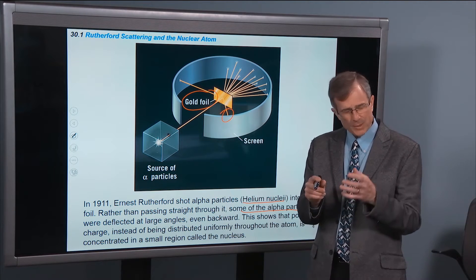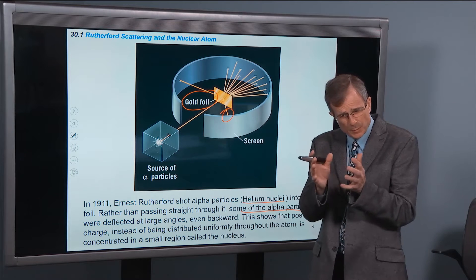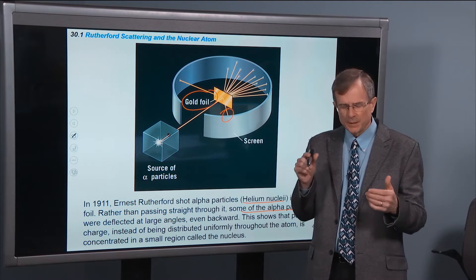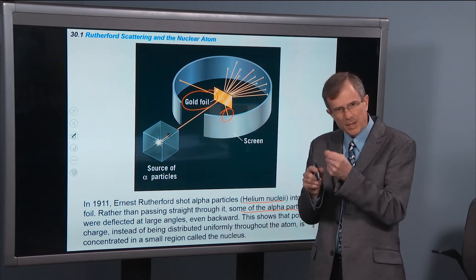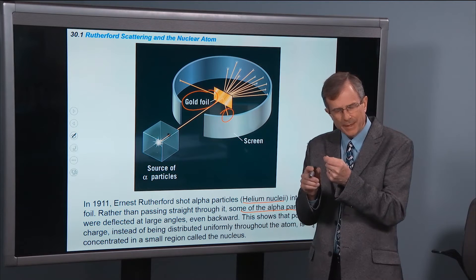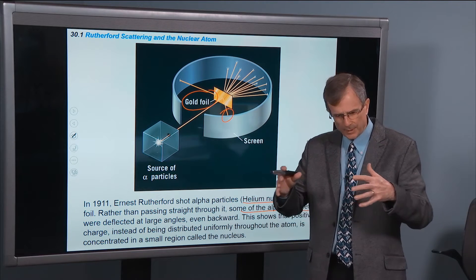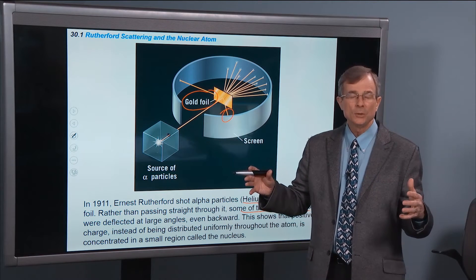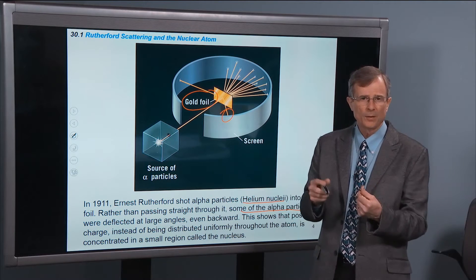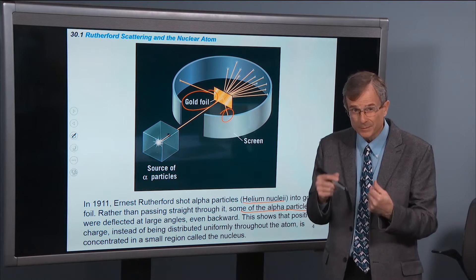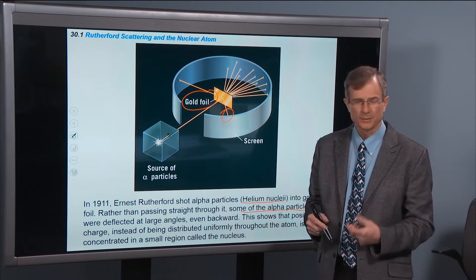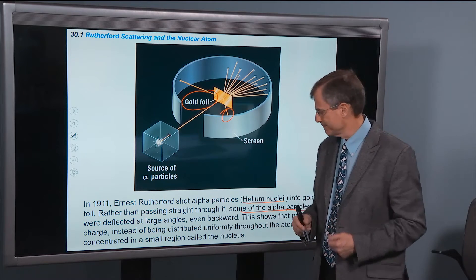The reason is that if the charge was spread out uniformly throughout the atom, there wouldn't be enough positive charge in that diffuse nucleus to repel the positively charged alpha particle — there are two protons coming together.